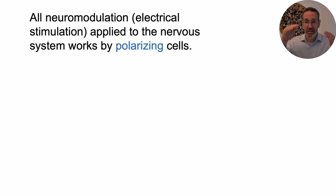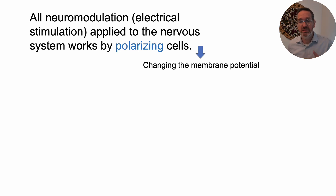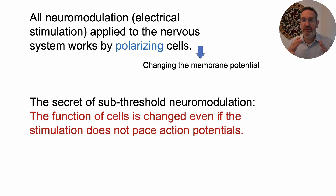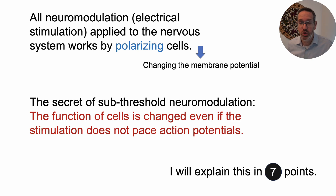At a high level, all neuromodulation that uses electrical stimulation works by polarizing cells — there is no exception to that. When we say polarizing cells, we mean a change in the neuron's membrane potential. The distinction with subthreshold neuromodulation — the secret of it — is that we don't have to generate action potentials. We can change the potential of cells in a way that is not pacing, not driving action potentials, but is nonetheless doing something. That's what I'll explain in these seven quick points.